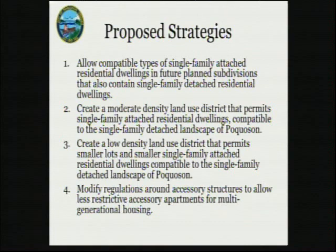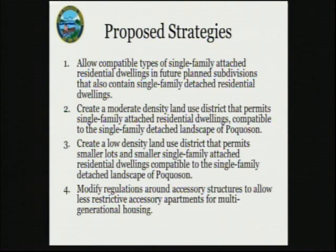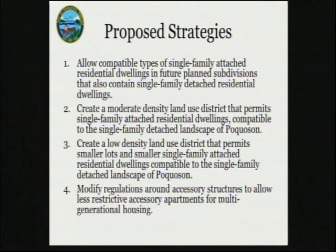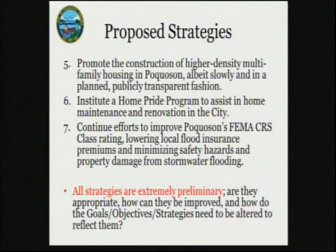Strategy three is to create a low-density land use district that permits smaller lots and single-family attached residential dwellings — basically a variation on strategy two leaning more toward single-family small starter homes. Strategy four is to modify the regulations around accessory structures to allow less restrictive accessory apartments, specifically for multi-generational housing. The city already has a policy allowing accessory dwellings on a primary structure, usually to provide housing for an elderly family member. This strategy proposes to codify that and make it more accommodating, perhaps by relaxing certain restrictions on utilities or appliances in the accessory building.